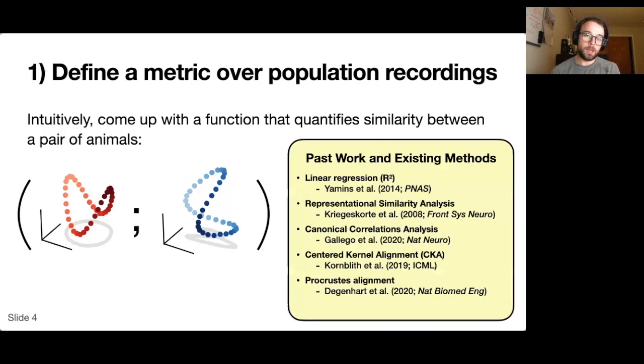There's actually several options that you'll find by looking through the past literature on this topic. One simple approach is to use linear regression to predict one of the data sets from the other. There are also more sophisticated methods such as representational similarity analysis, canonical correlations analysis, centered kernel alignment. The approach that we describe in our work is most similar to Procrustes analysis, which is listed at the bottom.